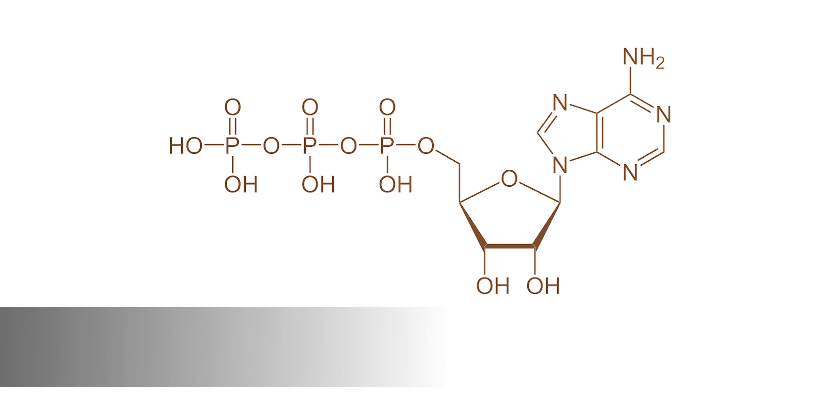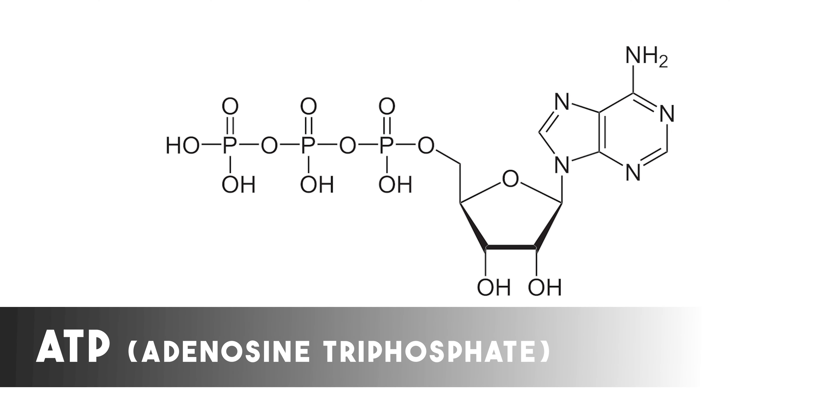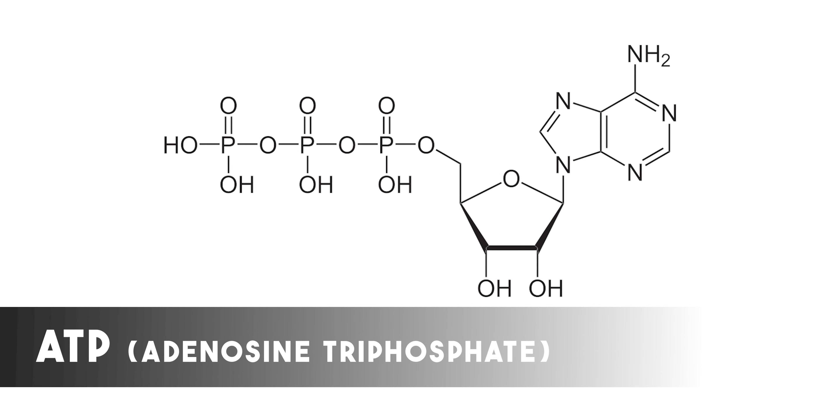Before we start understanding the energy systems, we need to understand a concept known as ATP. ATP stands for adenosine triphosphate. Adenosine triphosphate is the primary source of energy in the human body. All the energy systems strive towards production of ATP so that they can provide energy to the human body for all the activities it undergoes.